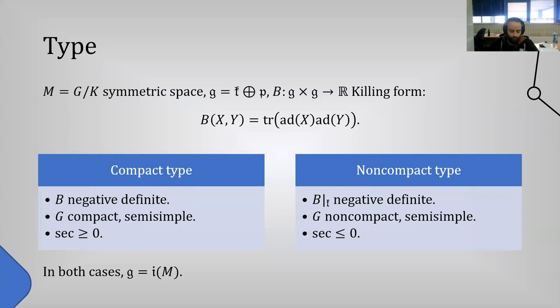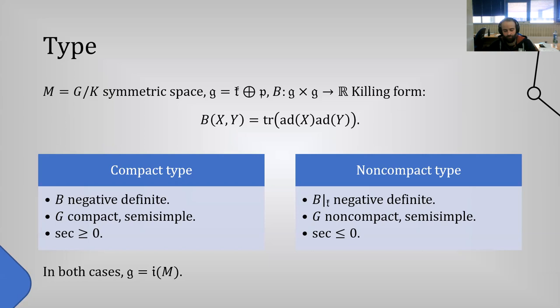When the group acting on the space is semisimple, the Lie algebra of the group coincides with the Lie algebra of the isometry group, and G is a finite-sheeted covering of the identity component of the isometry group. This allows one to work with isometries effectively. From now on, I will work only with symmetric spaces of non-compact type.